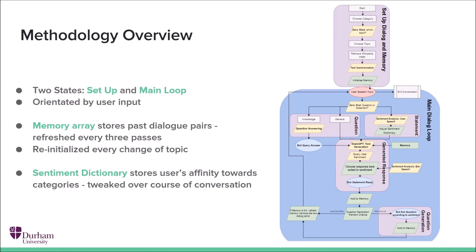Jill is maintained by two main data structures, the memory array, which stores past human-Jill dialogue pairs, and the sentiment dictionary, which stores the user's affinity towards particular topics over the course of the conversation.